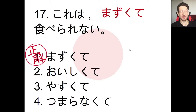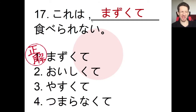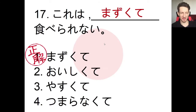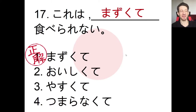The answer is: kore wa mazukute taberarenai. Whatever they're looking at — mazui means bad tasting or gross. Mazukute, taberarenai: it's so bad tasting that I can't eat it. It doesn't taste good, I can't eat it. Mazui is a very useful i-adjective, and of course we need to change it to the te-form — mazukute — meaning it's bad tasting, and as a result taberarenai, I can't eat it.